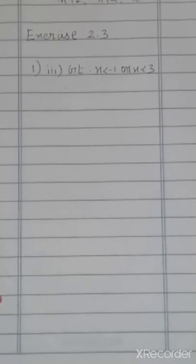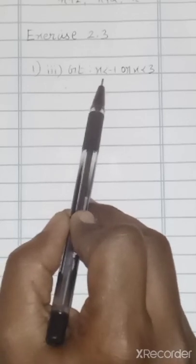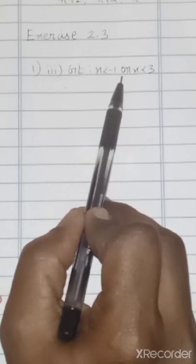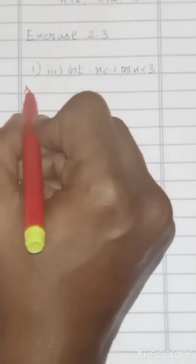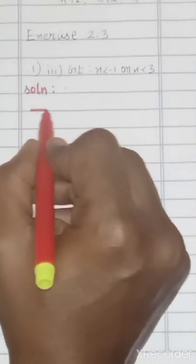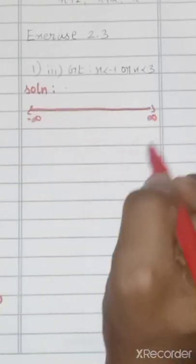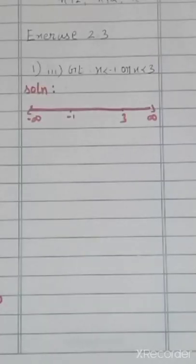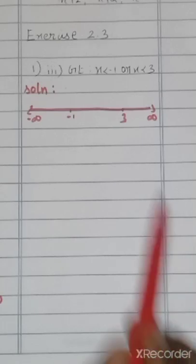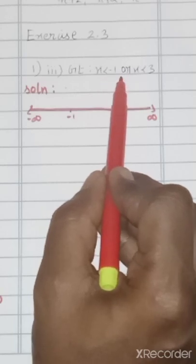Take your exercise 2.3, first problem: represent the following inequality in interval notation. Some inequality is given and we are going to represent it in interval notation. Take the third subdivision: x < −1 or x < 3. On the number line, −1 is here and 3 is here.